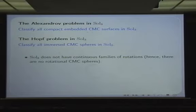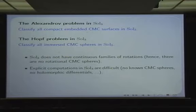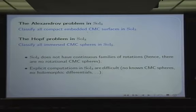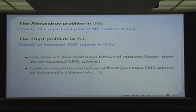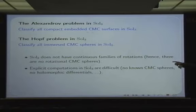The most natural and easy way to construct a CMC surface is to take a rotational example: the PDE transforms into an ordinary differential equation and you can deal with it. Here you cannot do it because you don't have these rotations. You can try to find the geometry by other methods, but it turns out that explicit computations in Sol₃ are very difficult. There are no known explicit constant mean curvature spheres, and we don't even know how to construct a holomorphic differential. Even geodesics of Sol₃ cannot be computed explicitly in general, only in certain directions.